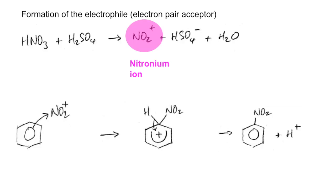The final thing we need to do is reform the catalyst. We take the H+ and the HSO4- ion formed in the first step and we get the sulfuric acid back.